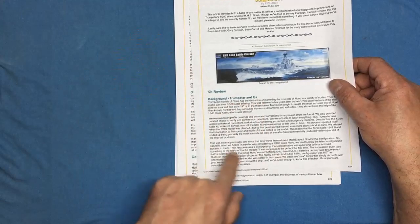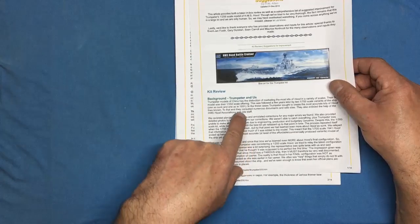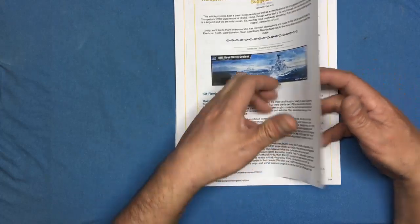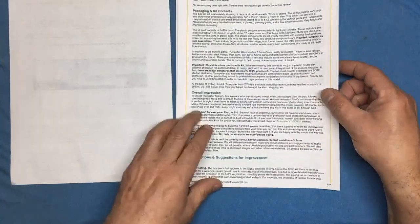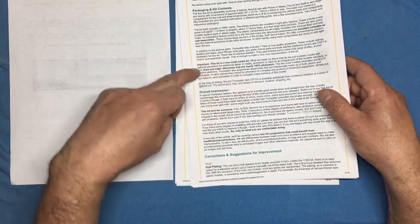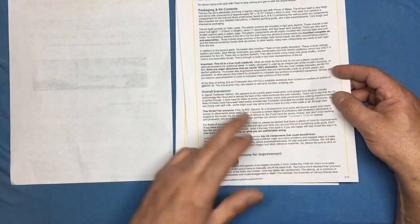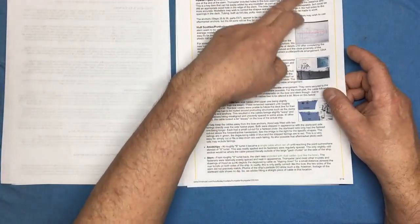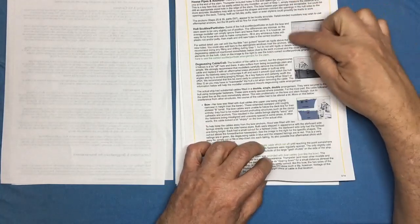If I just quickly flip through this, they're talking about the background with Trumpeter. Apparently they worked with Trumpeter on this kit but they also worked with Trumpeter on the 350 scale. You've got all the kit packaging here, talk about the price of it, which obviously now is out of date, overall impression, and then you've got corrections and suggestions for improvements. The hull plating is quite heavy around the bow.